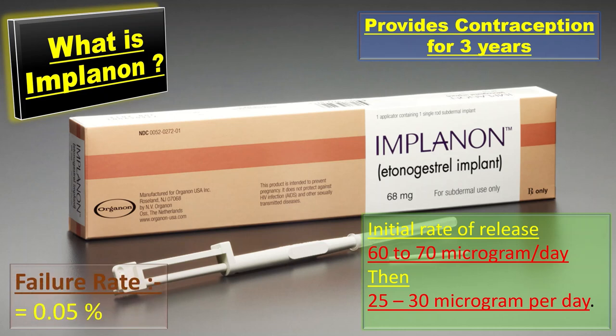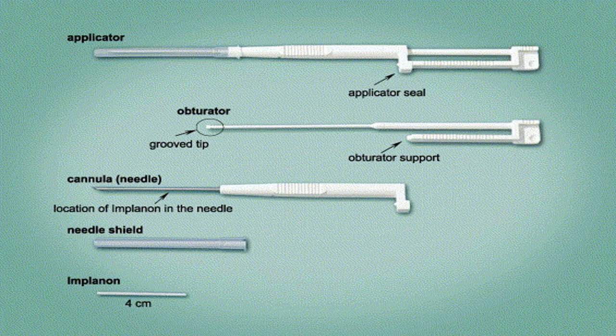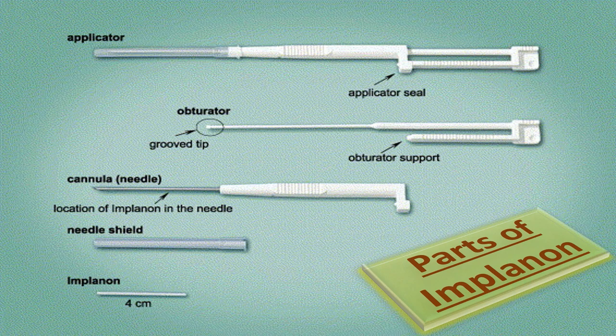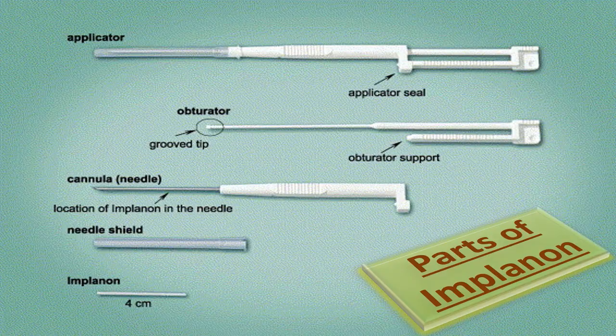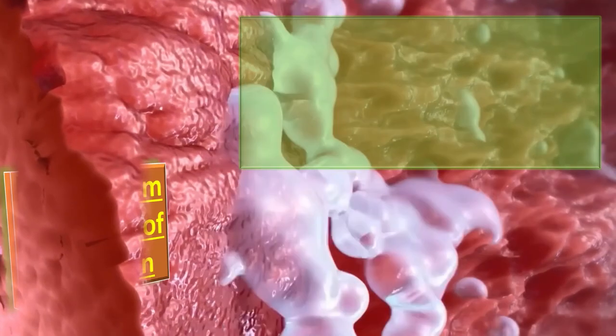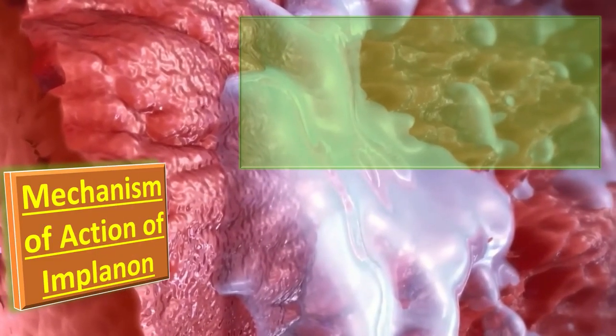The parts of Implanon include a specific Implanon applicator along with applicator seal, the obturator with a groove, tape, obturator support, cannula, needle with Implanon inside, needle sheath, and the Implanon rod of about four centimeters in size.